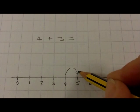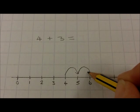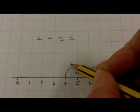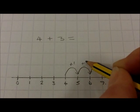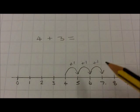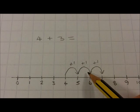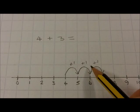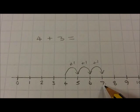1, 2, 3, adding plus 1 each time, until three jumps are added, so that 4 plus 3 equals 7.